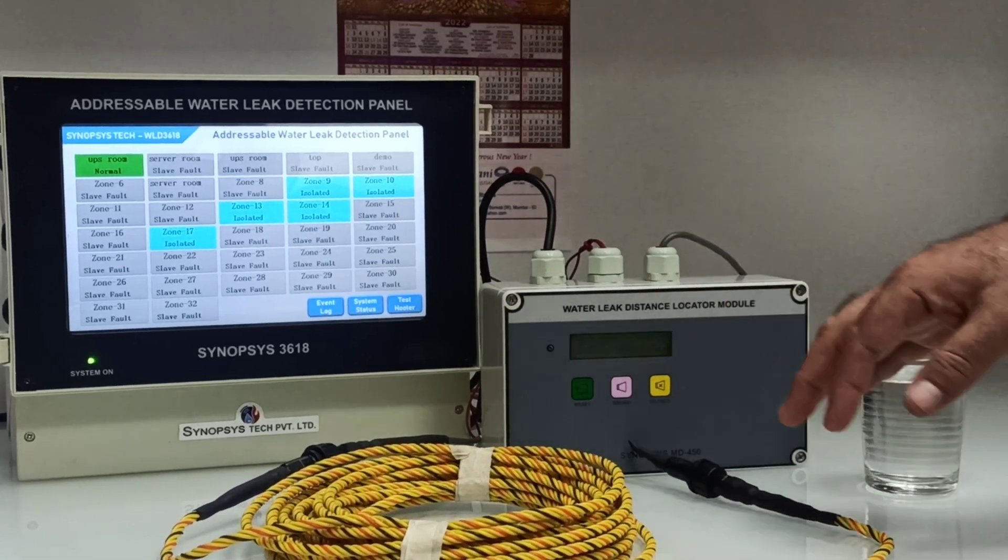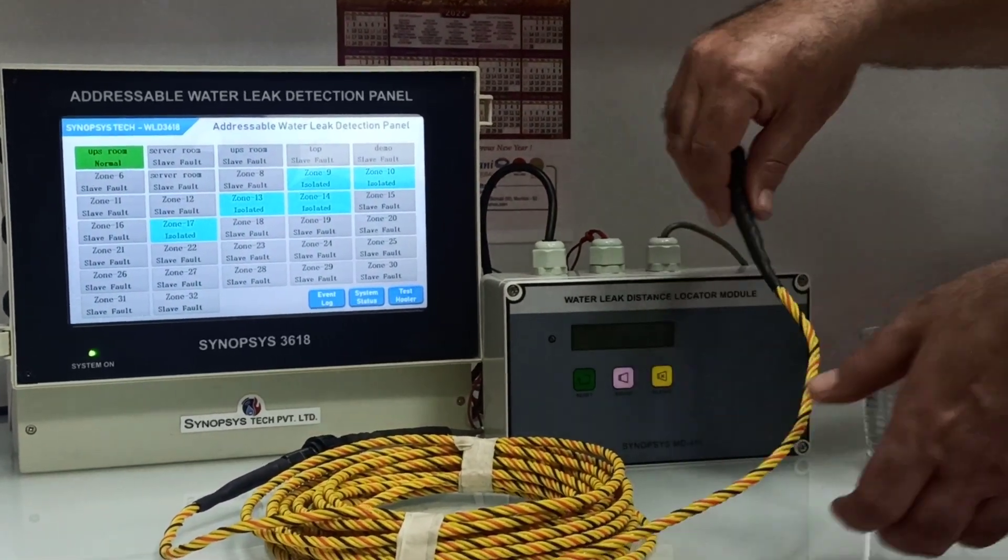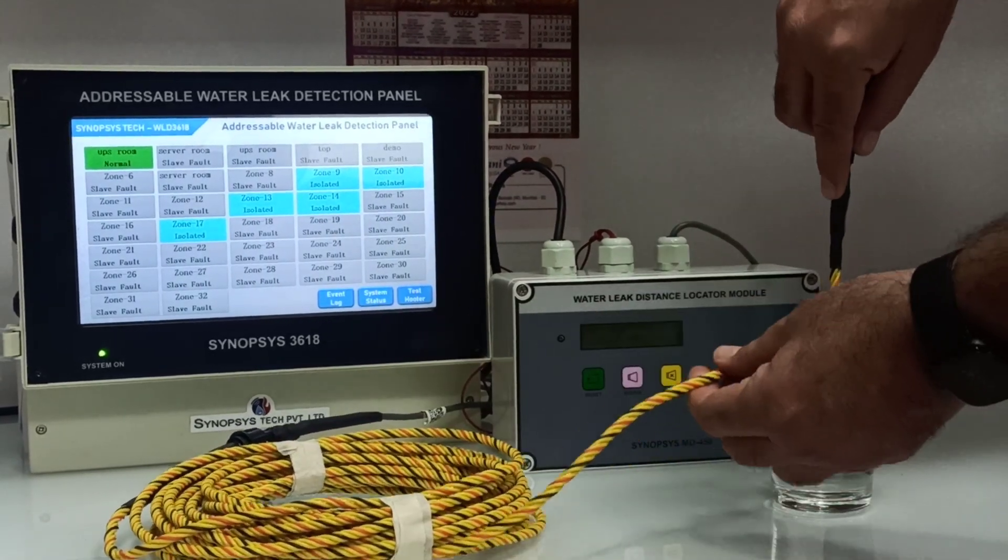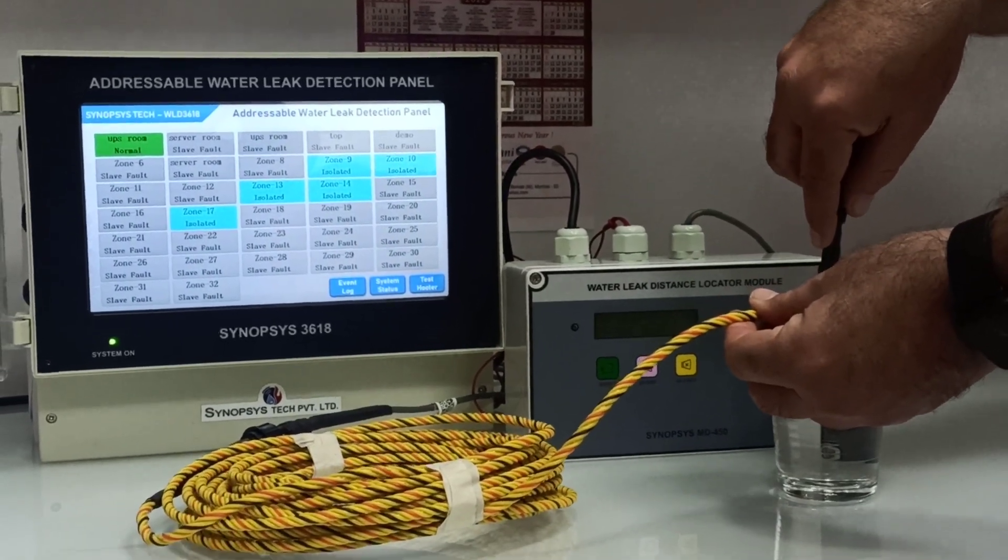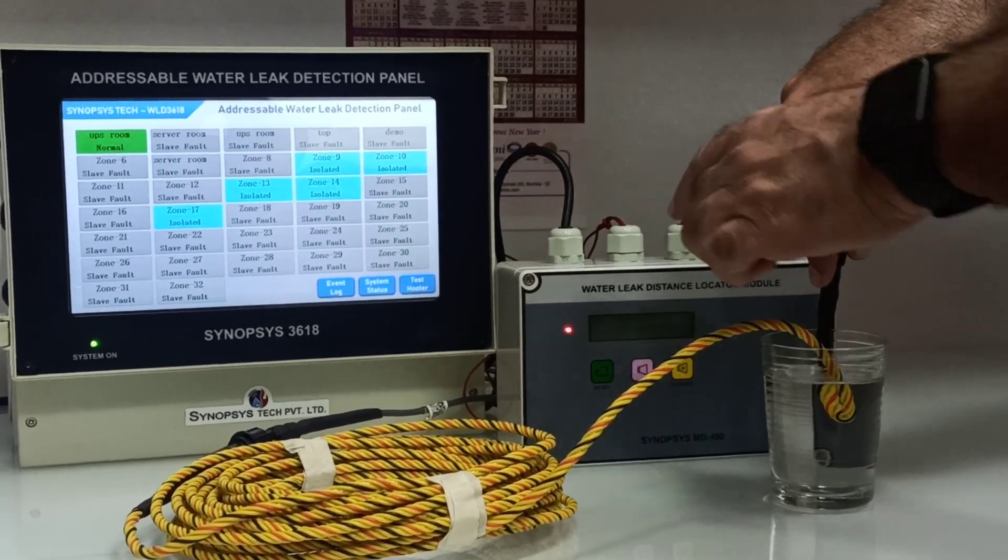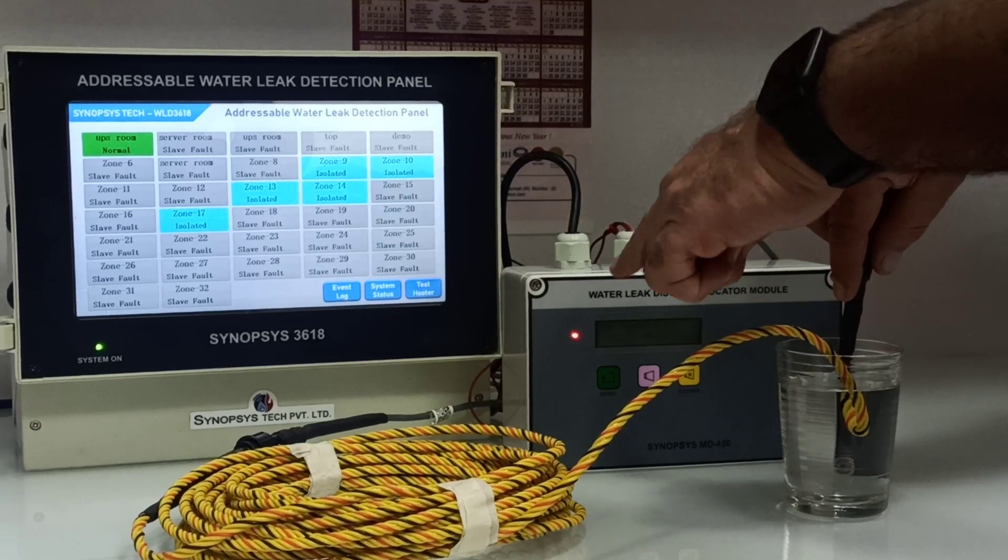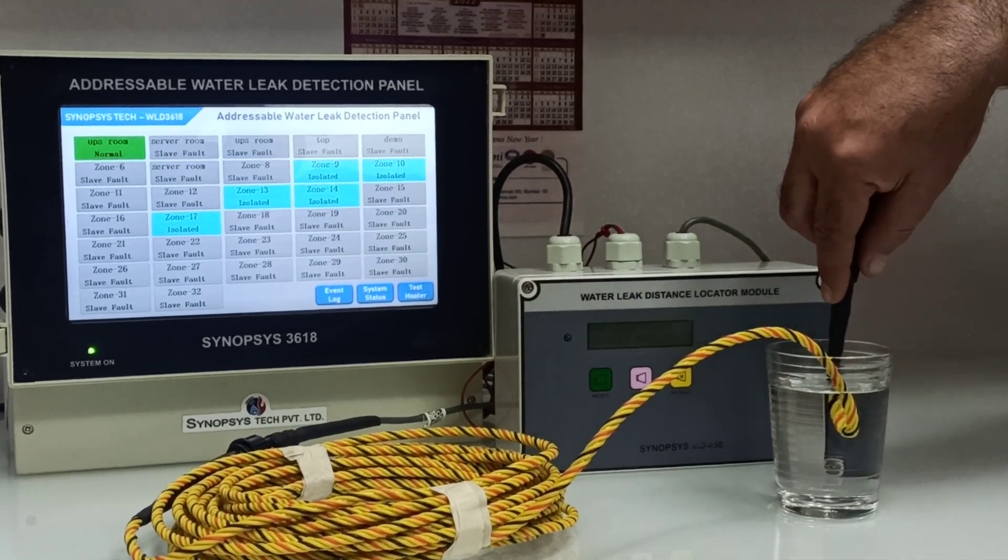Now I will demonstrate the leak with water. Once I put it in this, now this breather LED is there. It has turned steady now since it is detecting a leak.